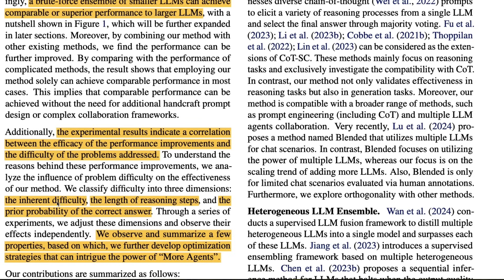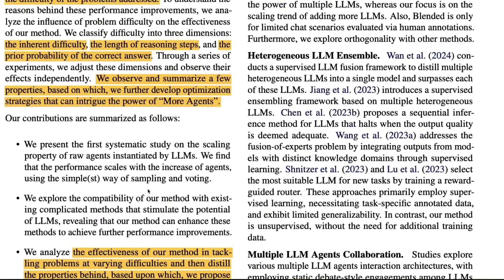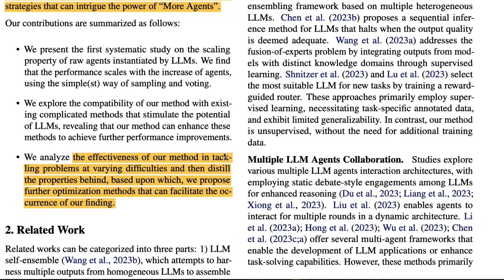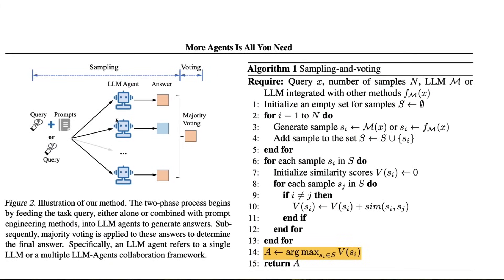They explore difficulty across three dimensions: inherent difficulty, the length of reasoning steps, and the prior probability of the correct answer. The algorithm works as follows: a query is sent across LLM agents, answers are collected, and then majority voting decides the final result — so you have sampling and then voting.